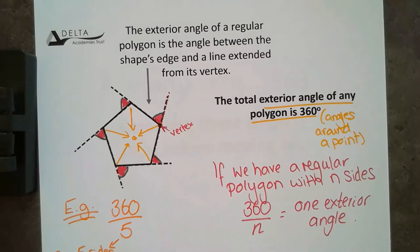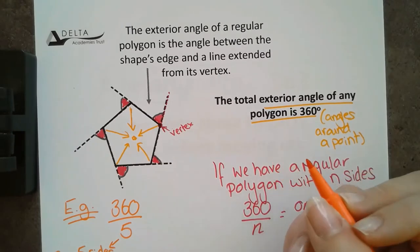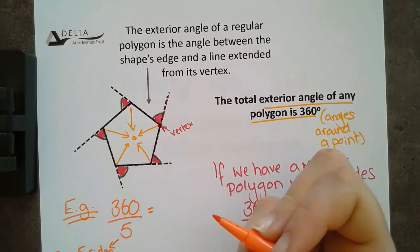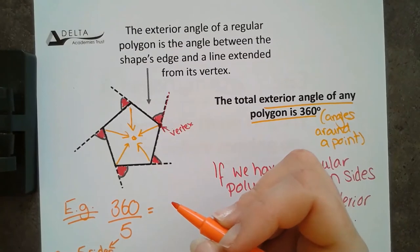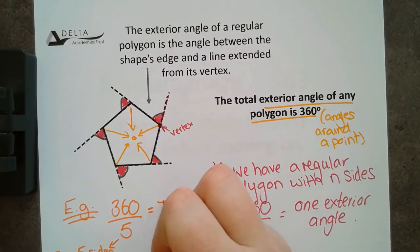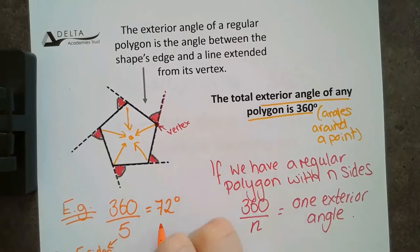360 divided by 5. I'm going to divide it by 10 and then times it by 2. So, 360, 36. So, 72 degrees for this one.